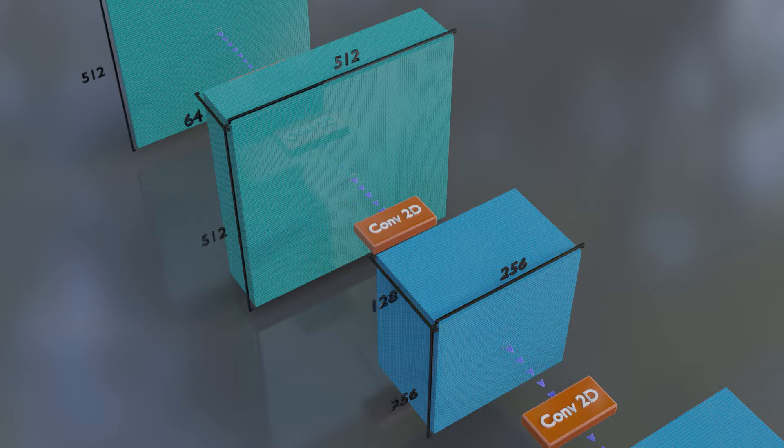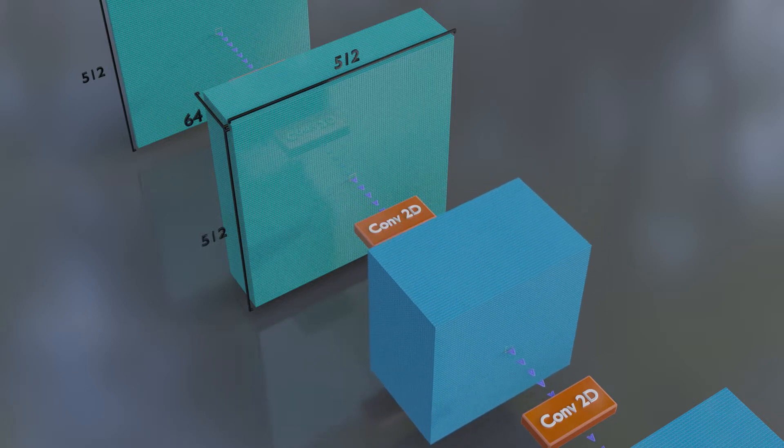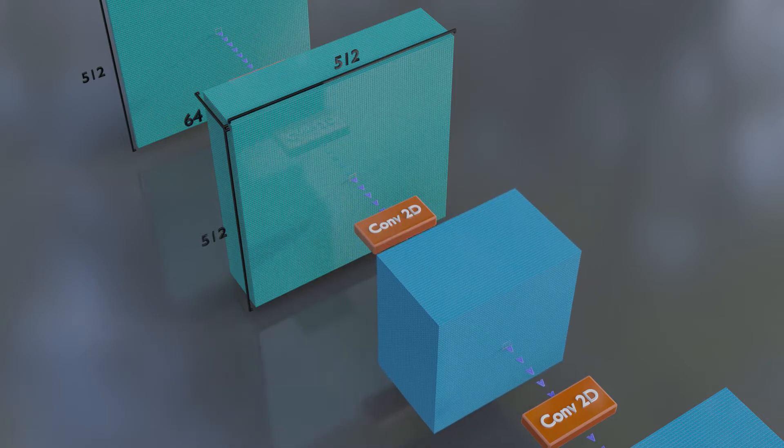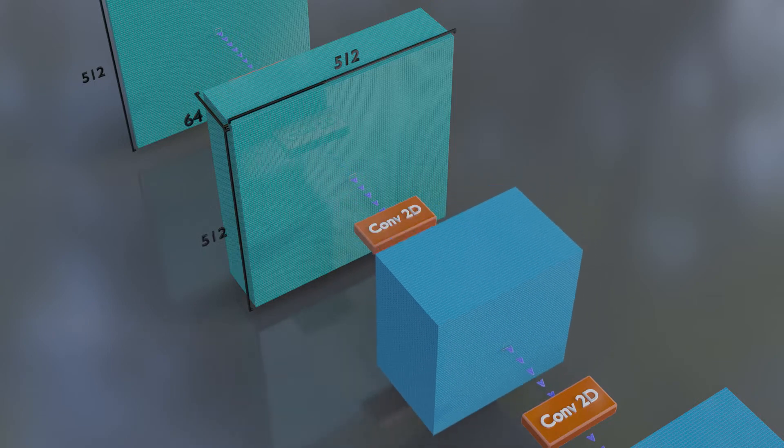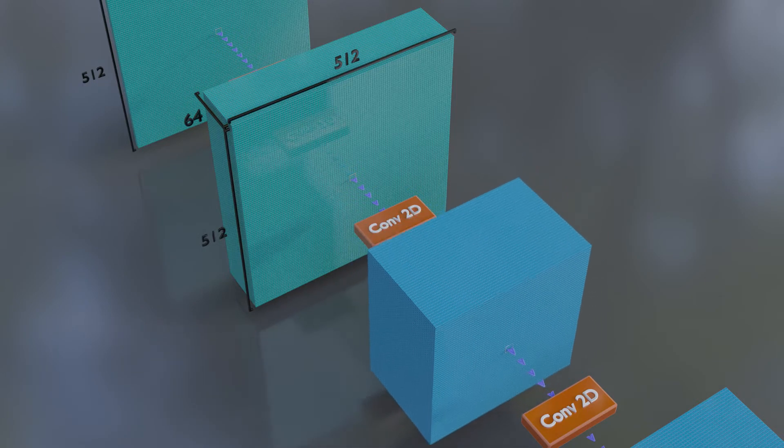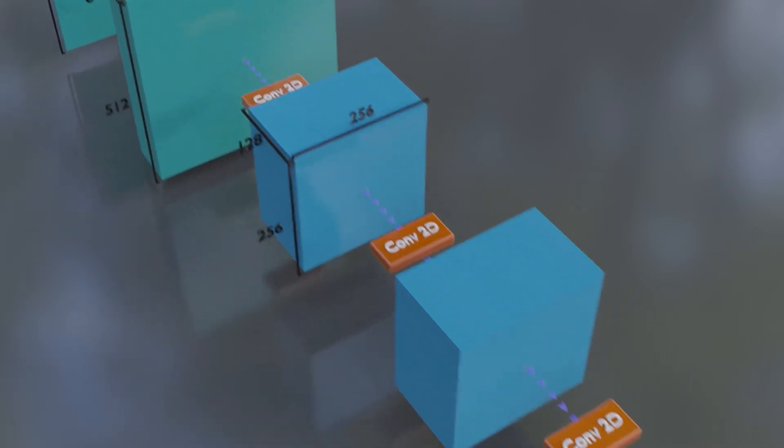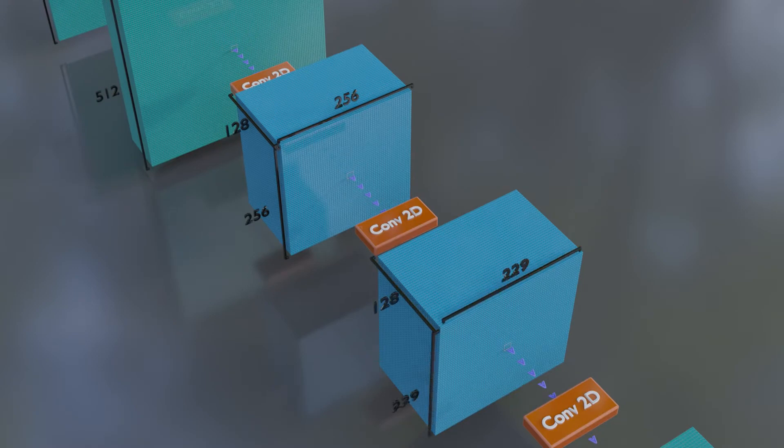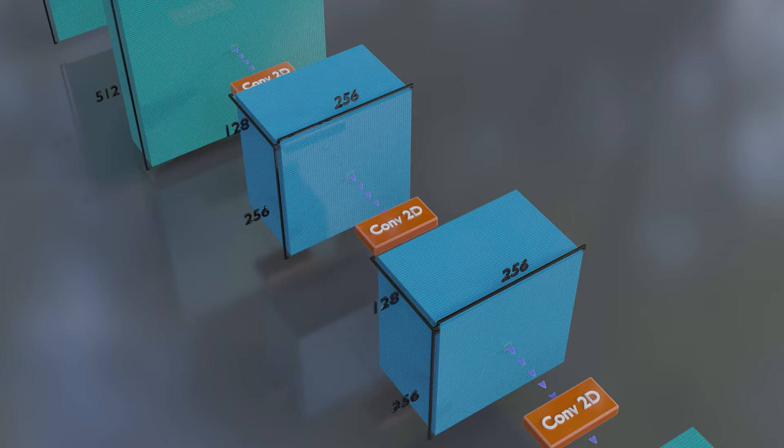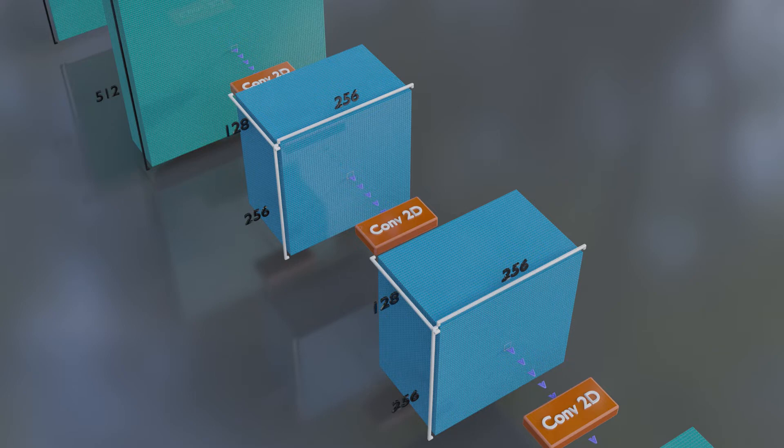Because we cut two dimensions in half and only doubled one dimension, the overall volume is cut in half. This is another common practice. It forces a network to compress information which is what really requires intelligence. The next layer doesn't change the feature count or the resolution. After changing resolution or feature count, models often perform more processing at that same resolution and feature count before changing again.